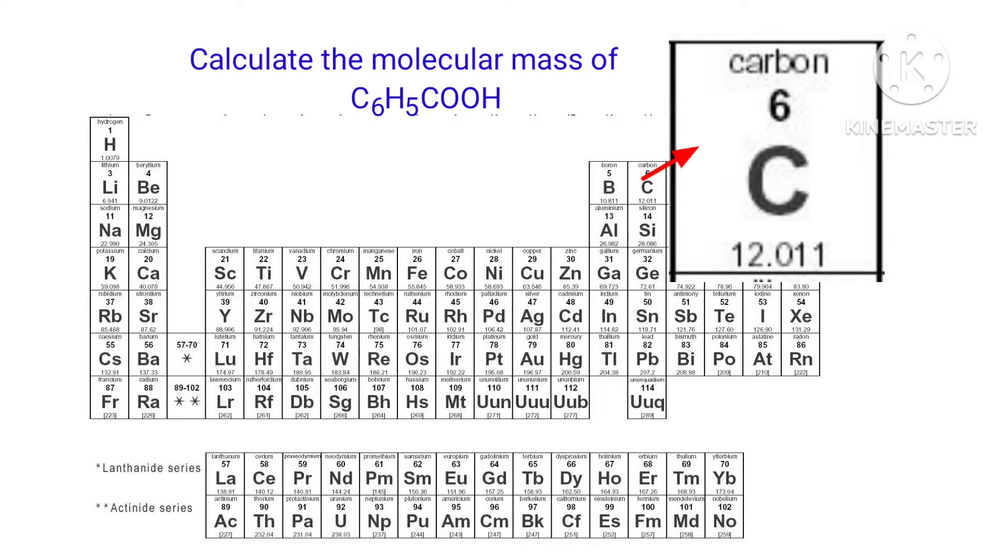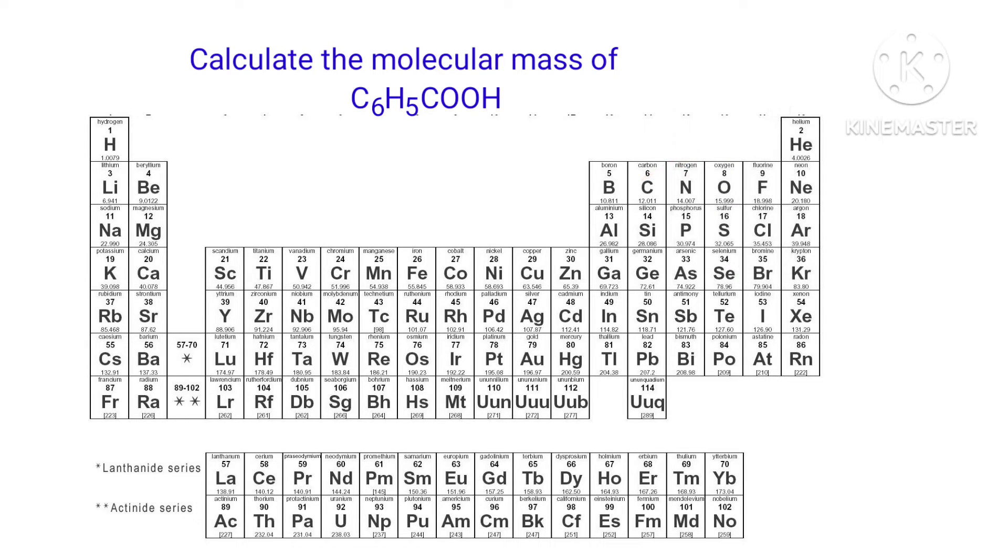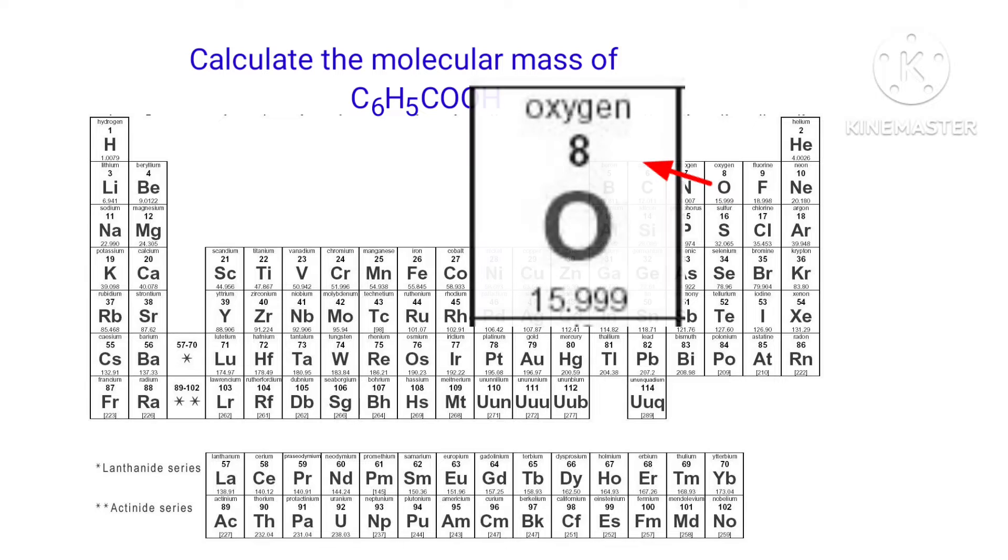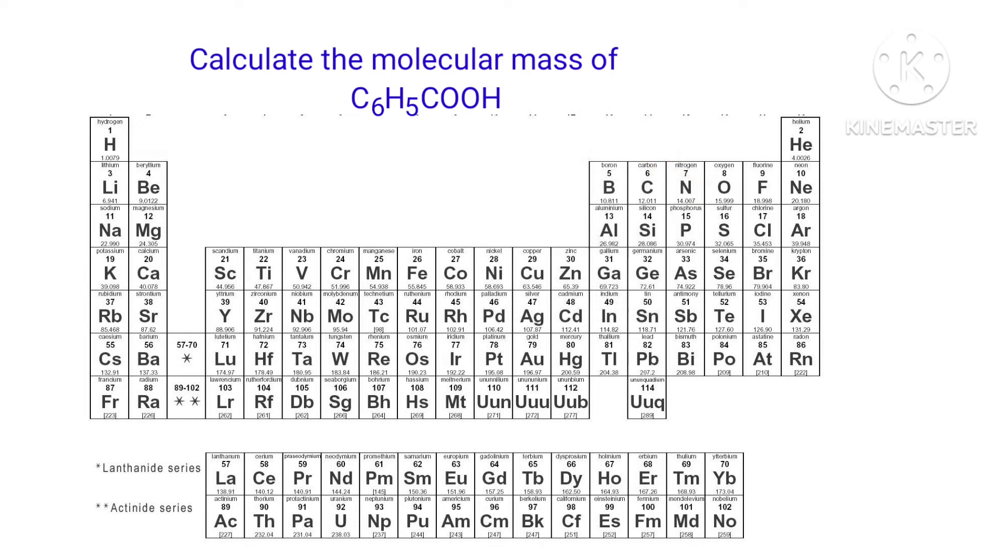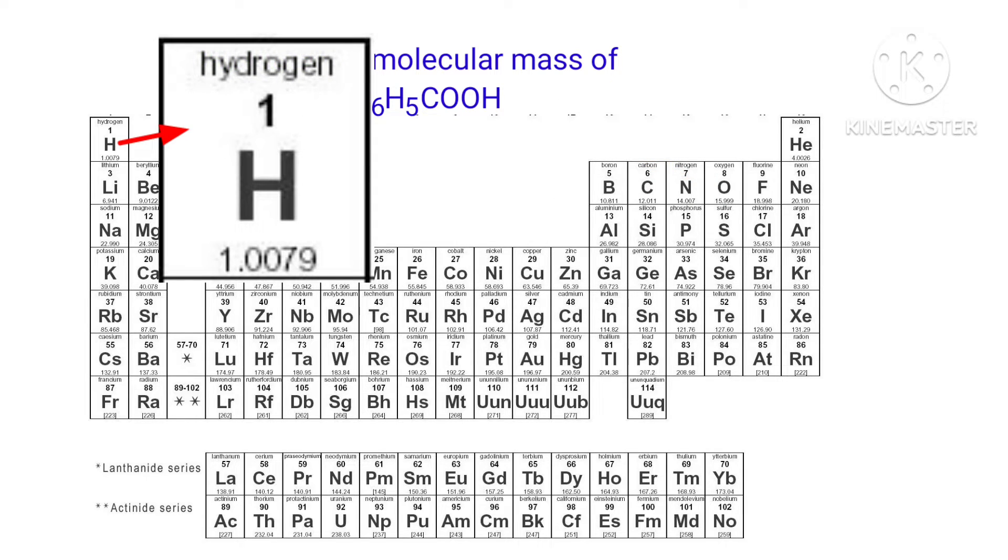The atomic mass of carbon is 12.011. The atomic mass of oxygen is 15.999. The atomic mass of hydrogen is 1.0079.